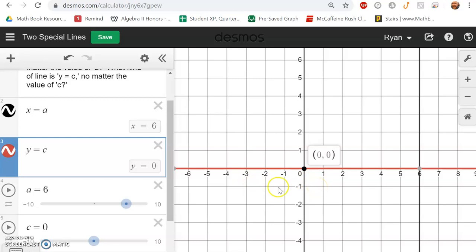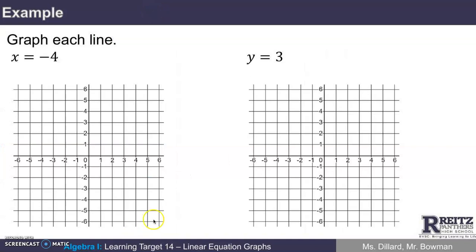So if you could summarize this in one sentence, x equals a is a vertical line, y equals c is a horizontal line. Okay, so now that we have that sorted out, let's see if we can make some line graphs.